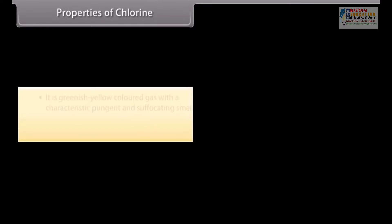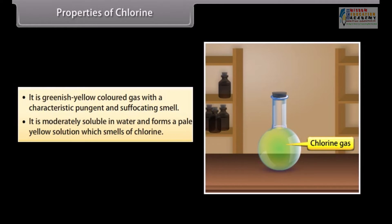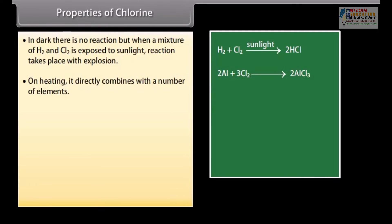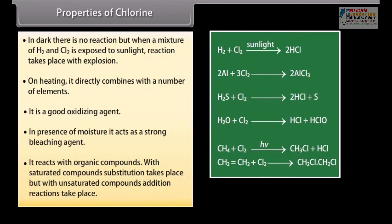Chlorine is a greenish-yellow colored gas with a characteristic pungent and suffocating smell. It is moderately soluble in water and forms a pale yellow solution called chlorine water. In the dark there is no reaction, but when a mixture of H₂ and Cl₂ is exposed to sunlight, reaction takes place with explosion. On heating, it directly combines with a number of elements. It is a good oxidizing agent; in the presence of moisture it acts as a strong bleaching agent. With saturated compounds, substitution takes place; with unsaturated compounds, addition reactions take place.